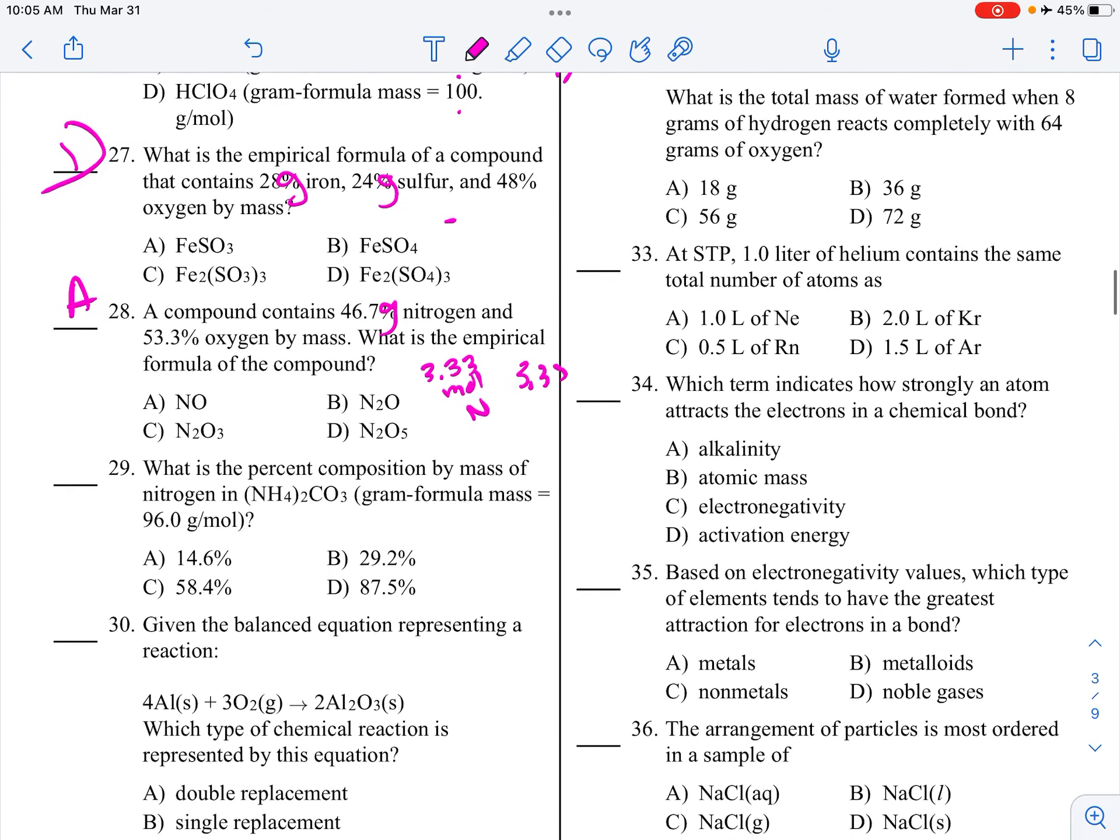Percent composition by mass. So, it gave me the whole thing. So, that's my denominator. Then, it's asking for nitrogen. This is how they get you. There's two of them. So, 14 times 2 is 28. 28 divided by 96 times 100 gives me 29.16, which is 29.2 and it rounds.